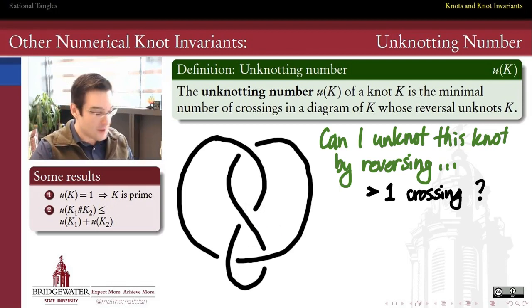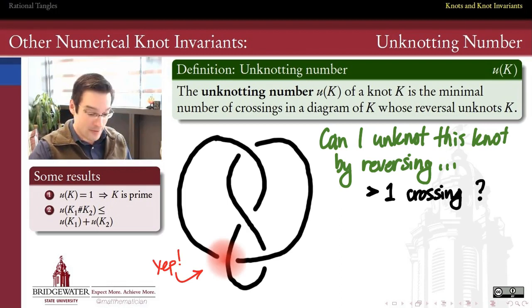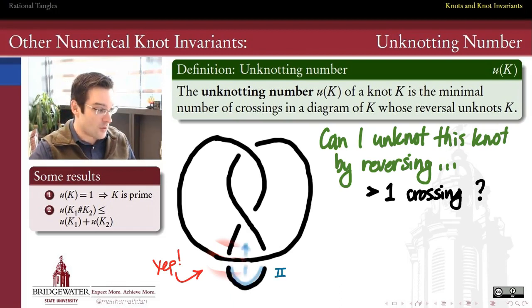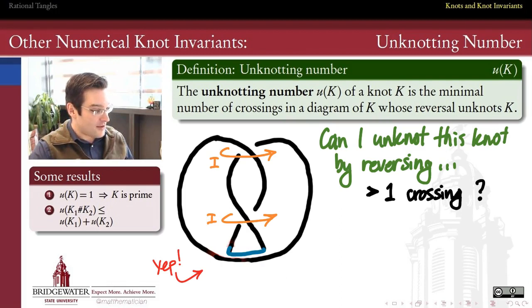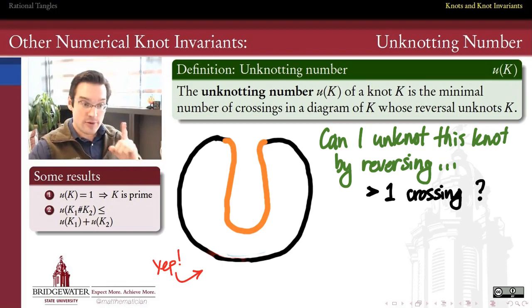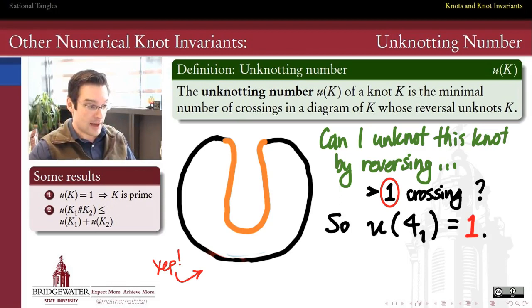What about this one? That one I think will work. If I reverse this crossing from an over to an under instead, now I have this non-trivial loop down here at the bottom, which I can Reidemeister type two away, and end up with this. Then I've got a couple of boring twists that I can Reidemeister one away. Sure enough, what I get is a diagram of the unknot. So for the figure eight knot, all I needed to do was reverse one crossing to get a diagram of the unknot.